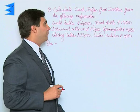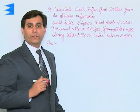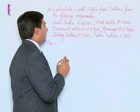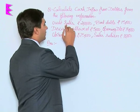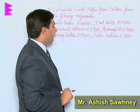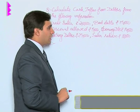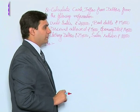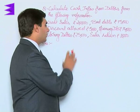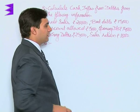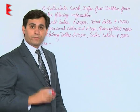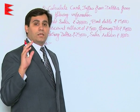Calculate cash inflow from debtors from the following information: credit sales of rupees 2 lakh, bad debts of 15,000, discount allowed 5,000, opening debtors 14,000, closing debtors 25,000, and sales return of 10,000.